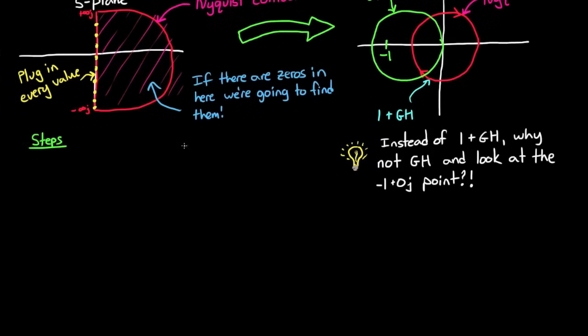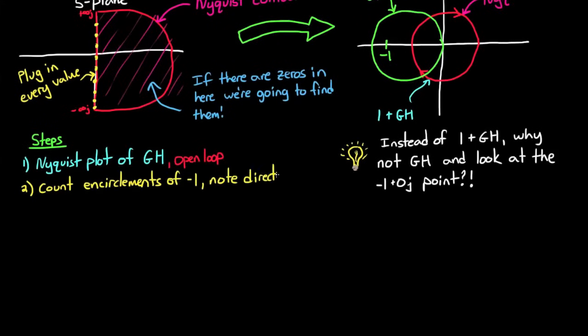So the steps are that we take the open-loop transfer function GH, we make a Nyquist plot by plugging in each point on the Nyquist contour, and count the number of times minus 1 is encircled, and in which direction. From that, we can determine how many more poles or zeros are inside of the Nyquist contour, which, again, is the entire right half plane.